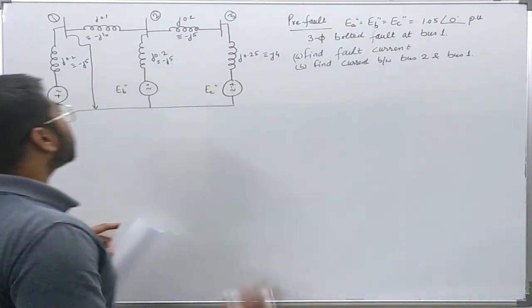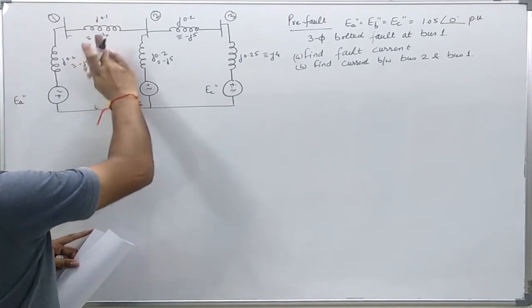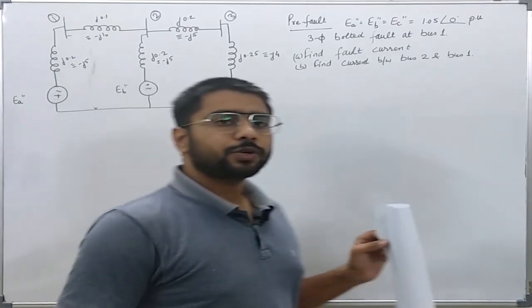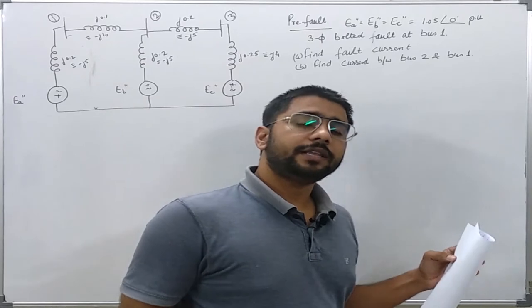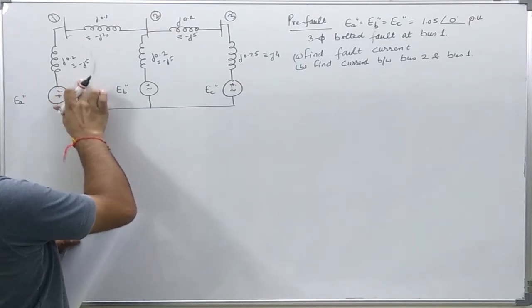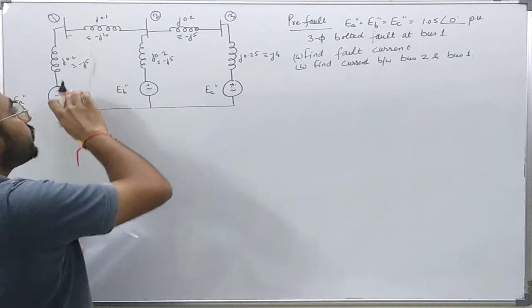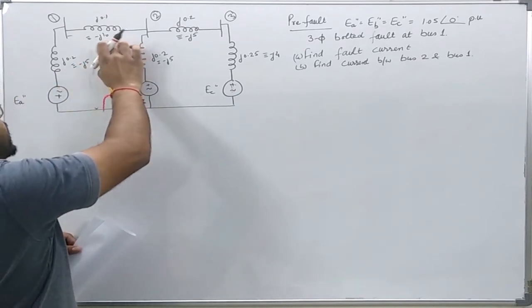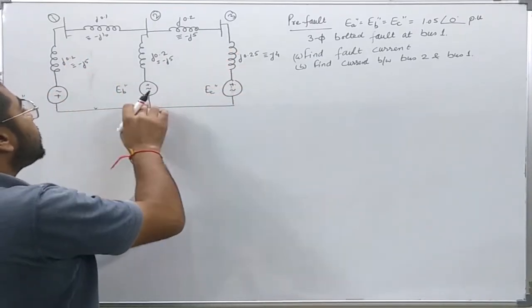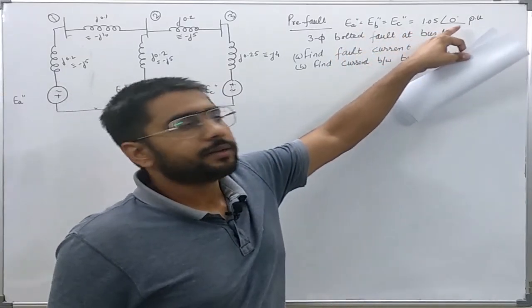Before the fault occurred, in this system all the voltage sources were equal. This shows that there cannot be any current flowing into the network. Because in any loop, if this is the voltage rise, the same voltage drop will be there in the same loop. So there cannot be any voltage drop along the loop, cannot be any current flowing into the impedances. We can see that there can be no current present when these three voltage sources are equal in values.